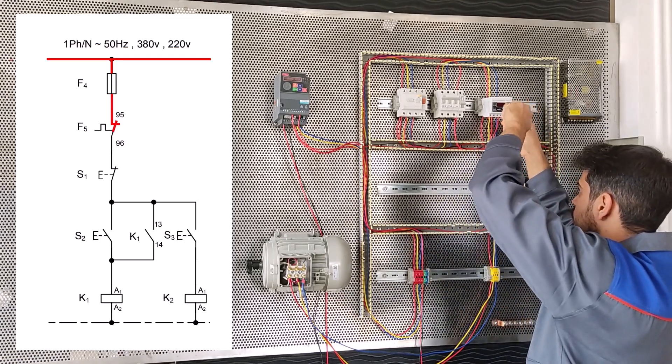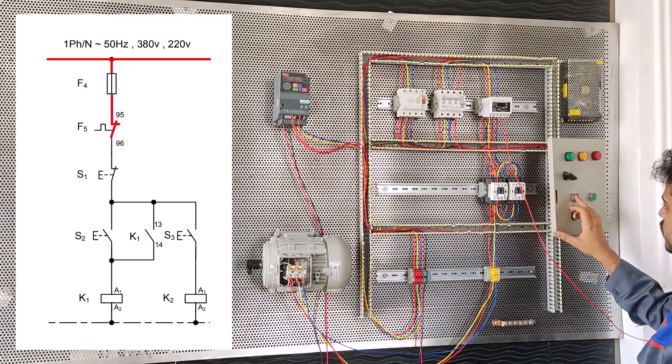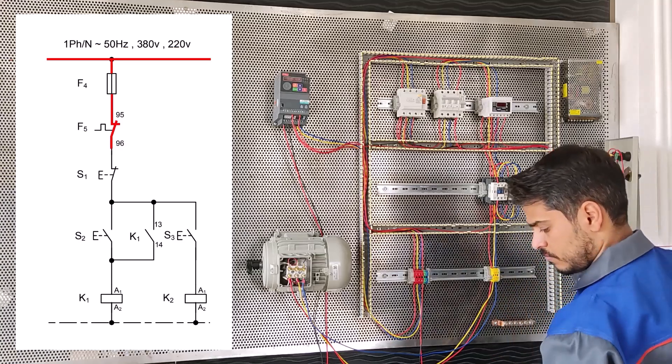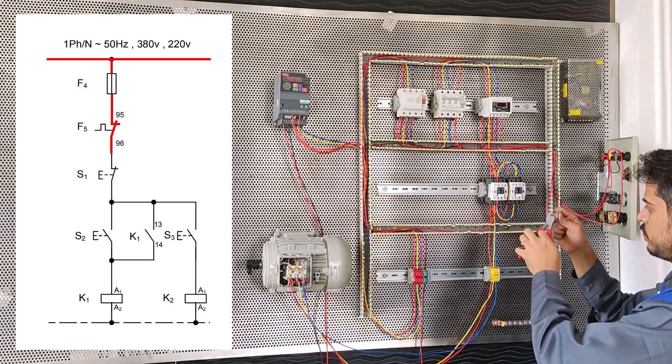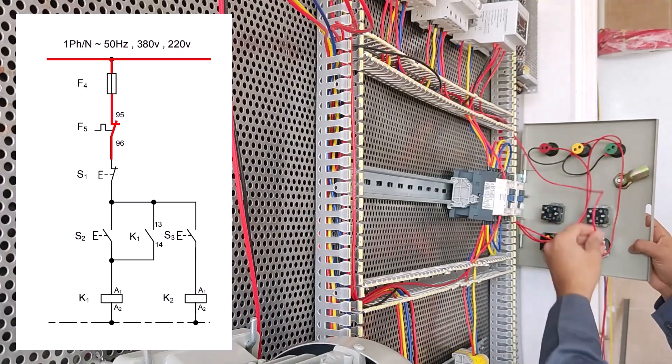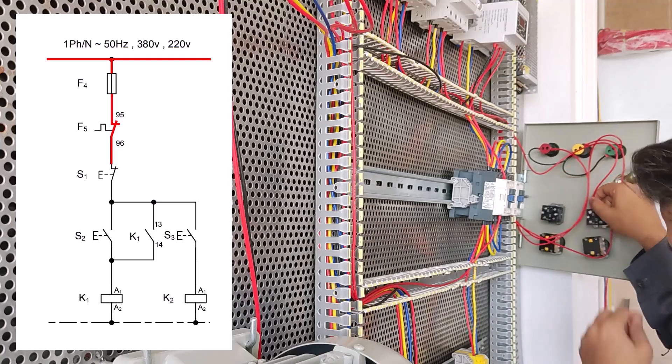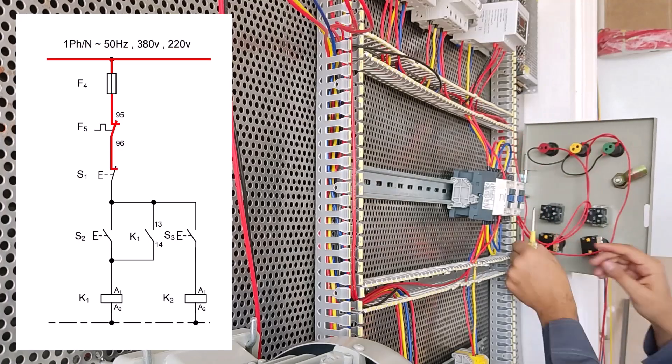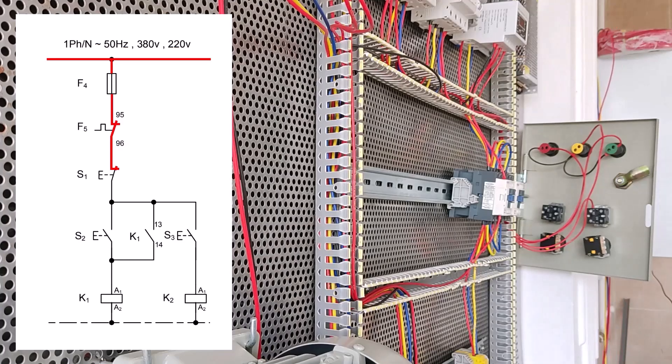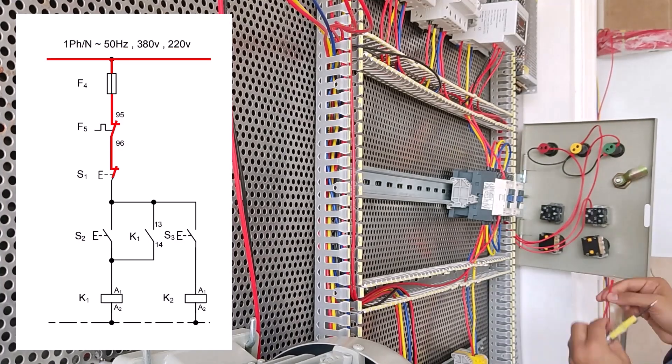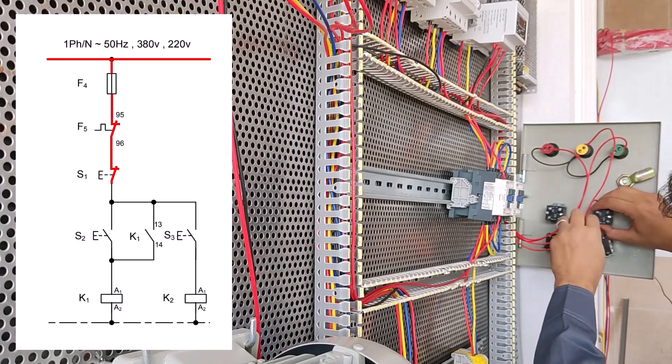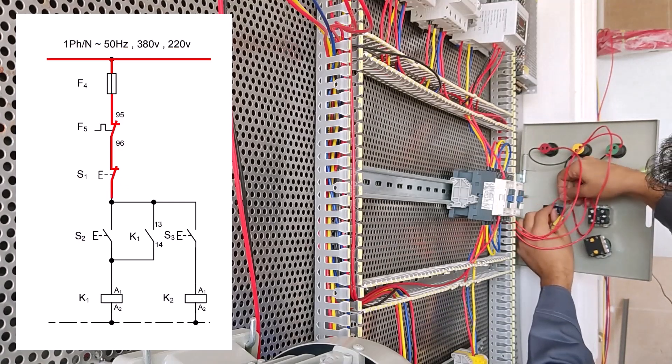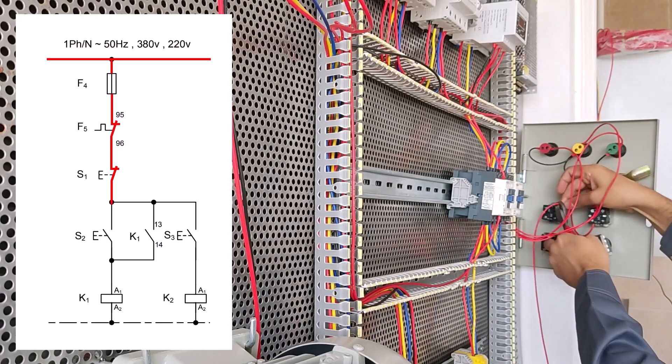Now we connect from normally open load control to 11 stop S1. As you can see in the map this is a red line. Now we connect from 12 stop S1 to 13 start S2.